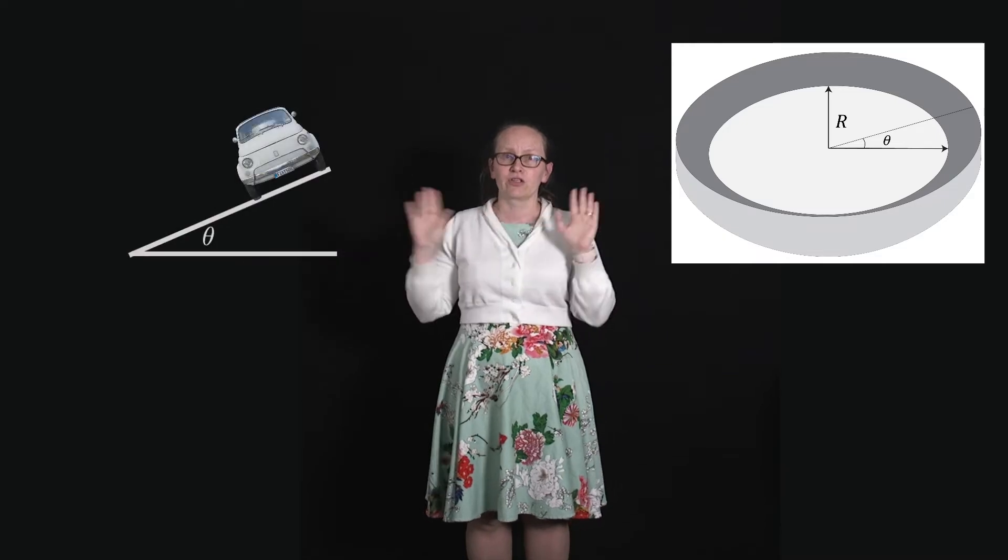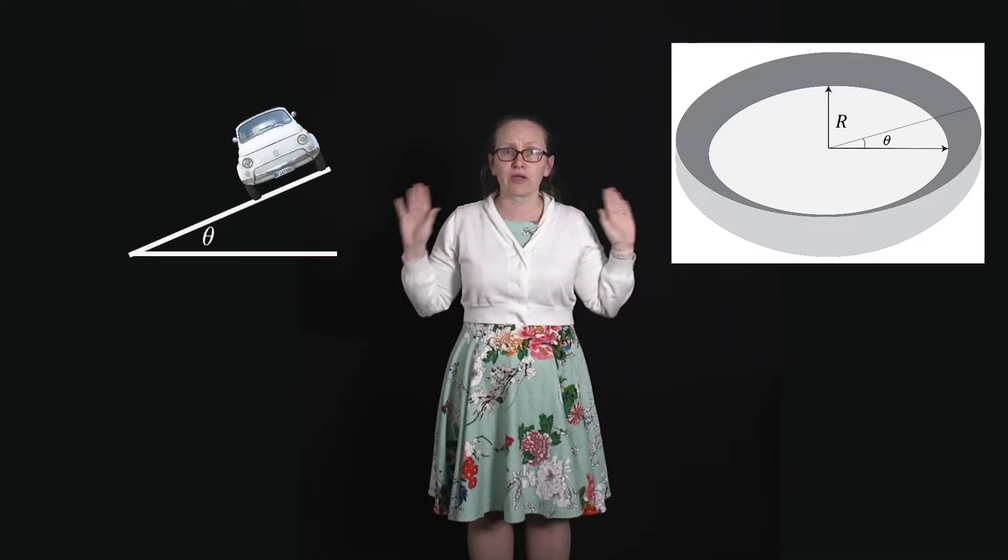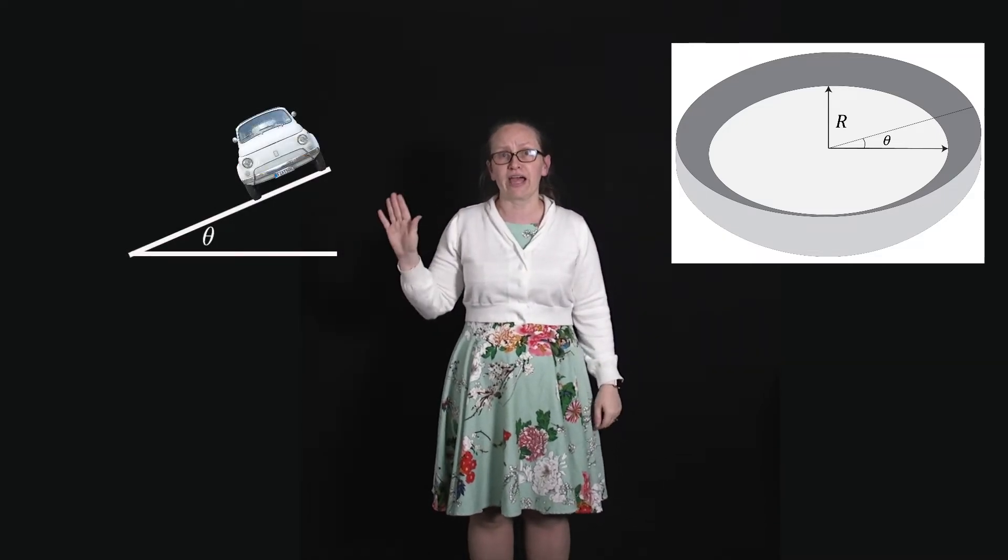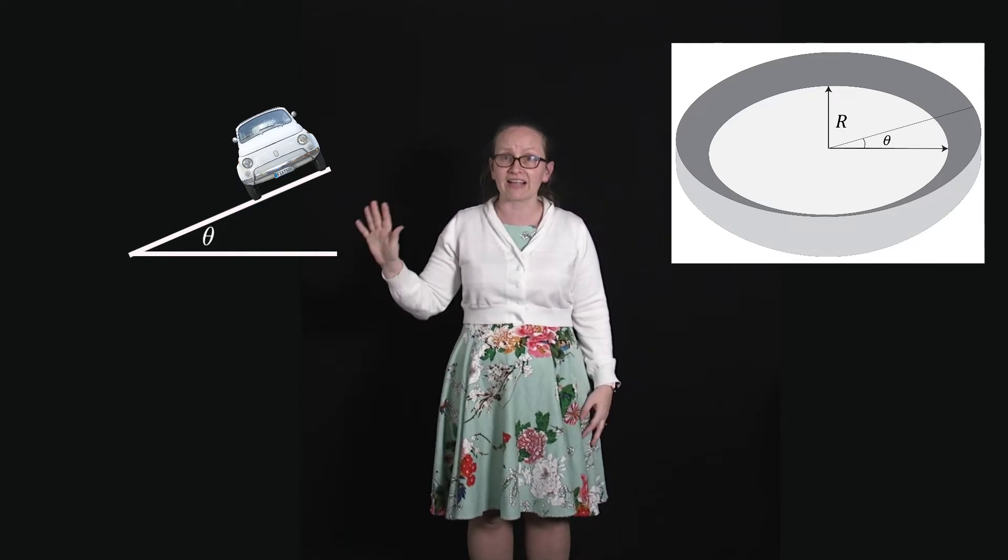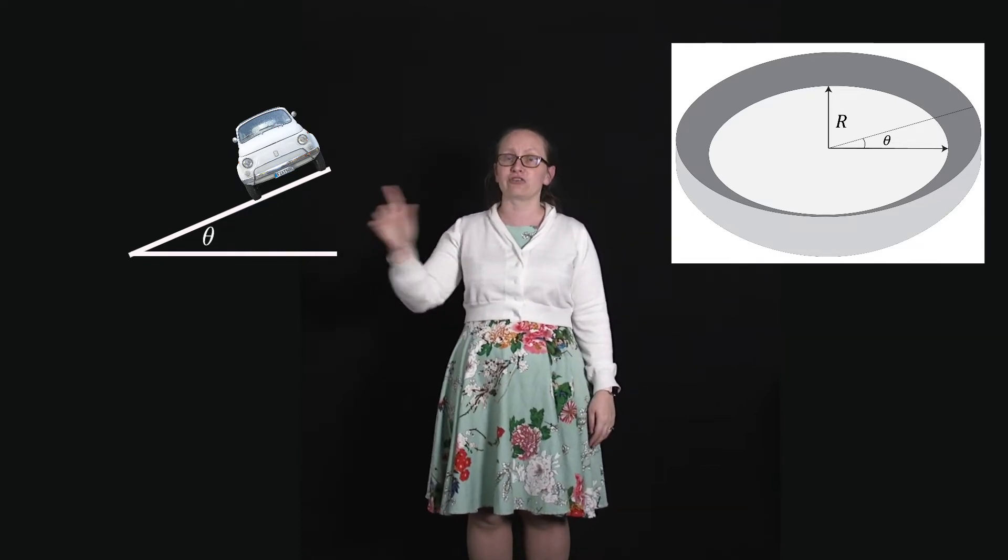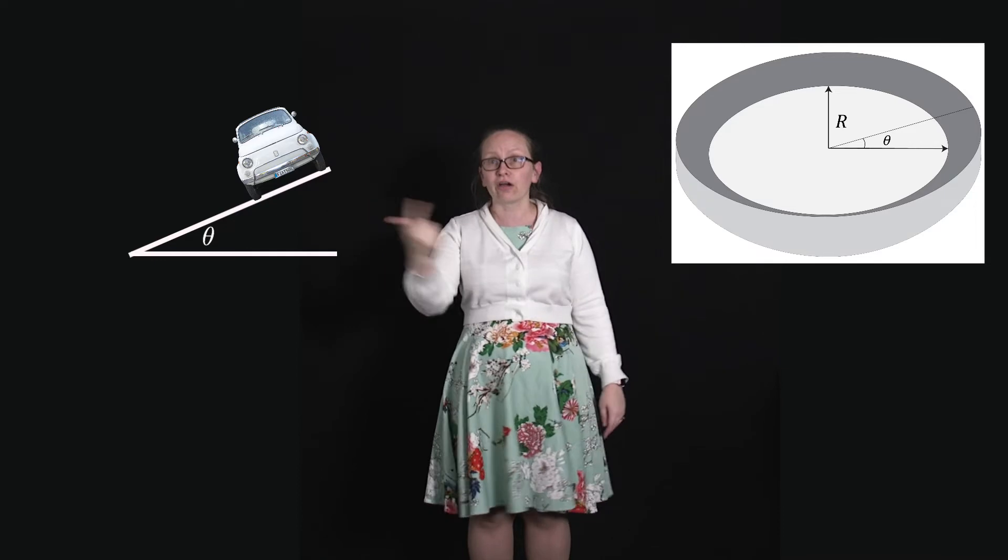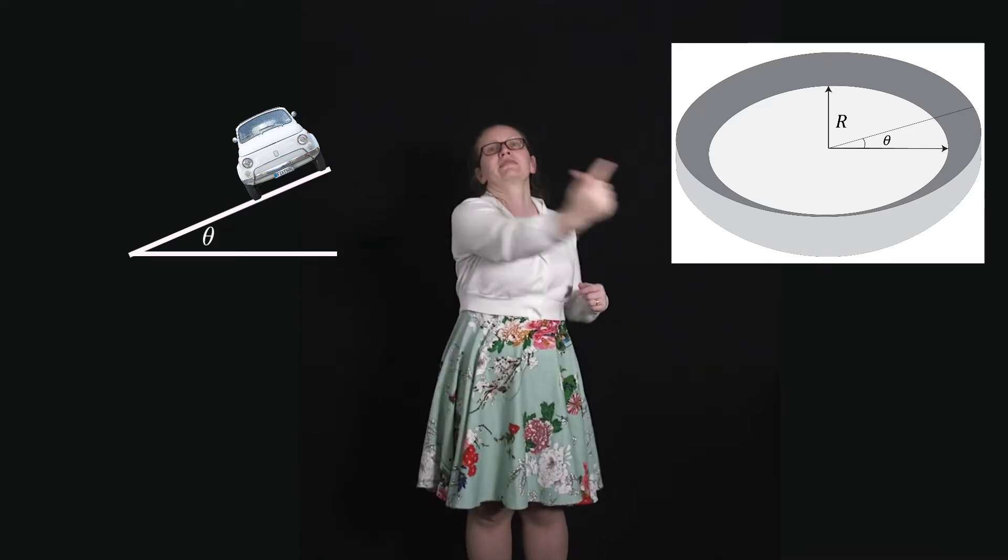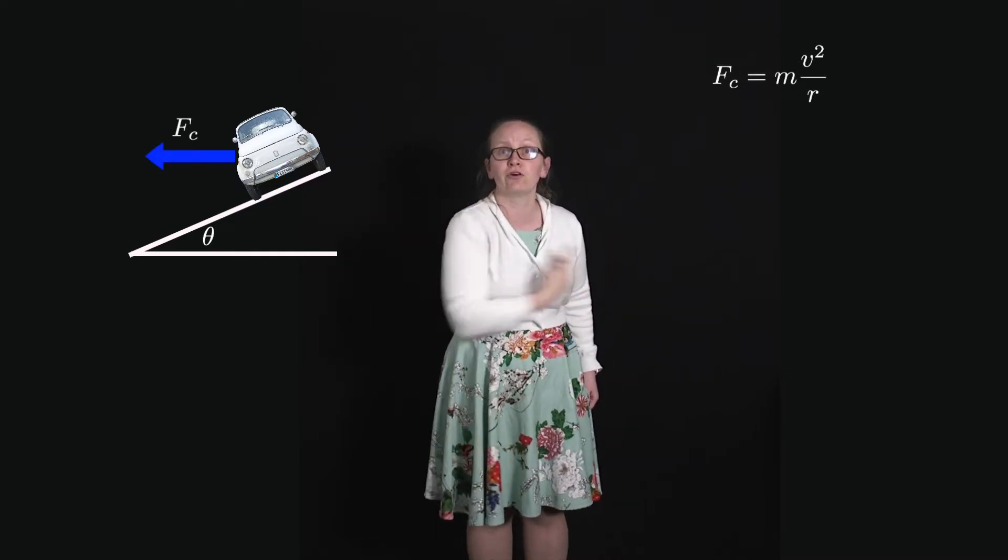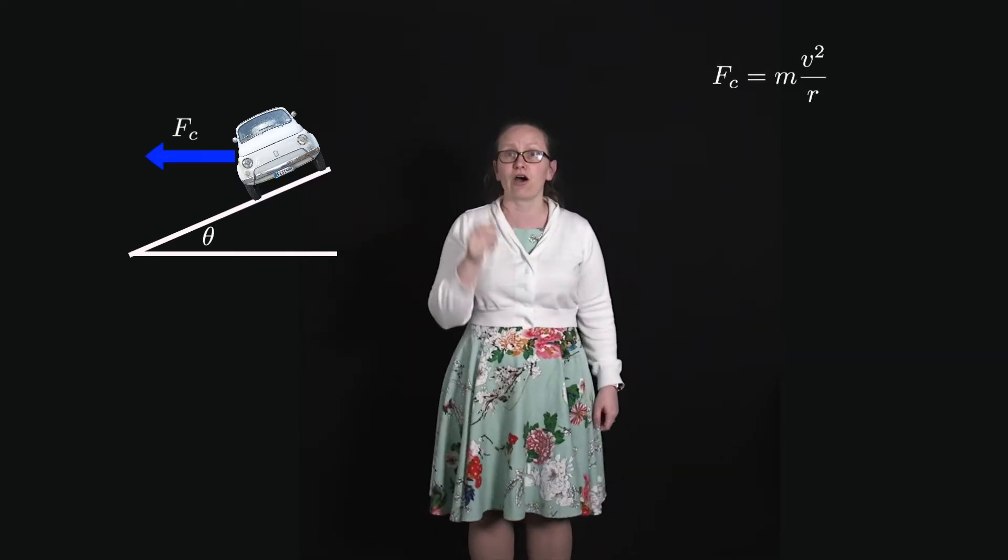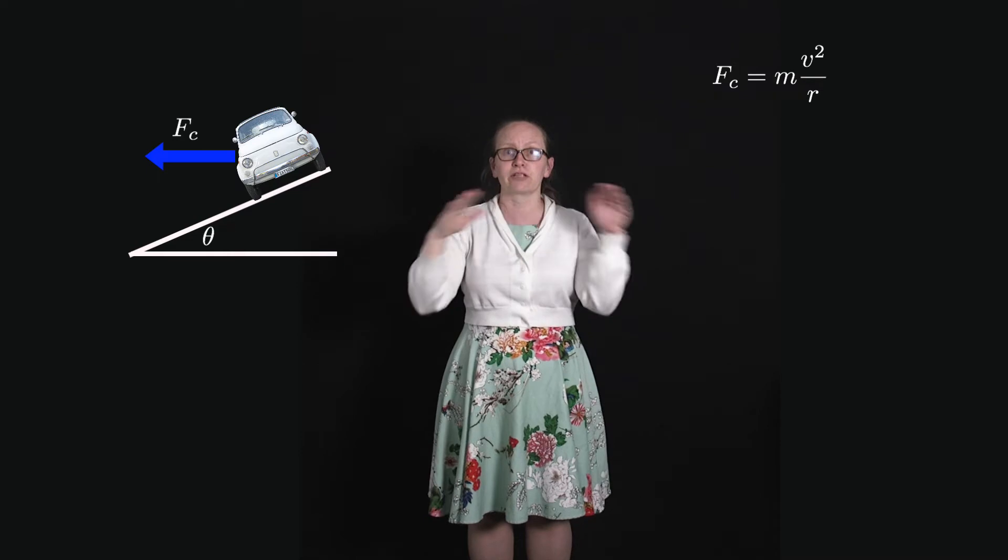Like we always do, we're going to start by drawing a free body diagram to describe the forces acting on our car as it traverses this curve. Because it's going around in a big circle, we know what the net force is on that car. It's described by equations for circular motion. We've got the centripetal force acting towards the center of the curve. That is our resultant force.